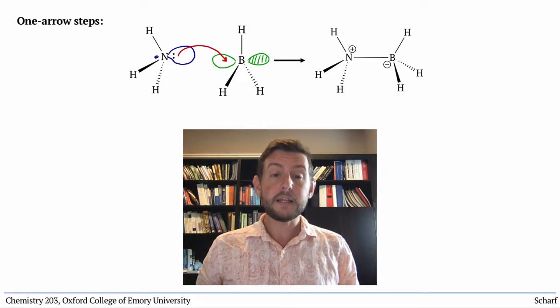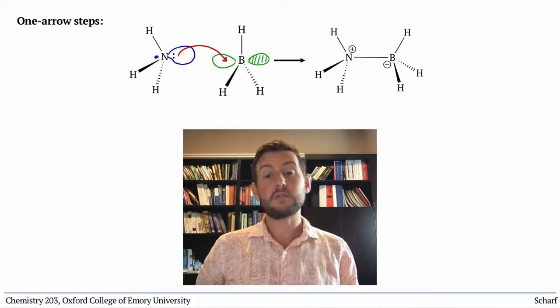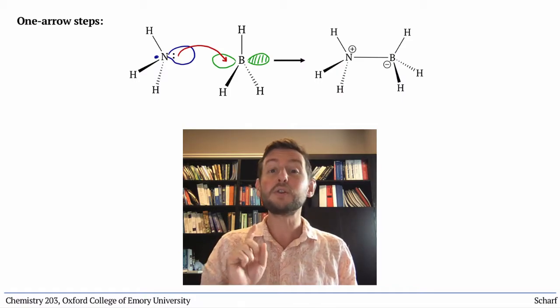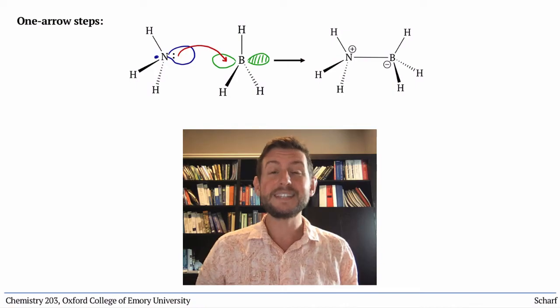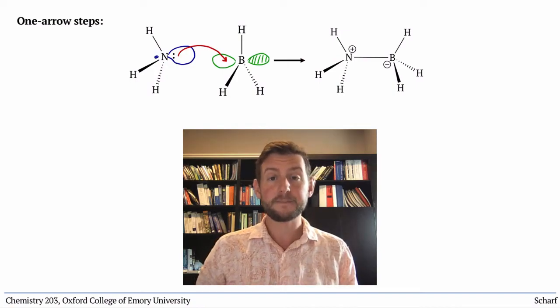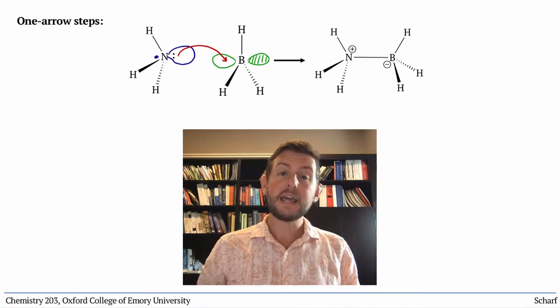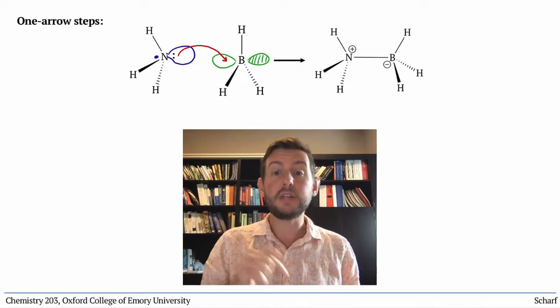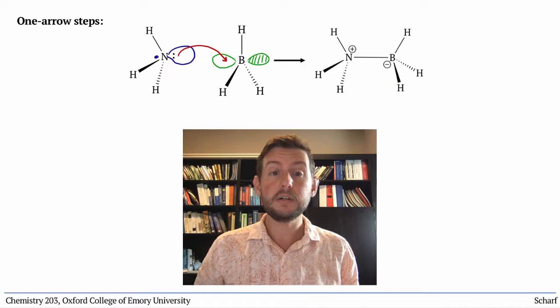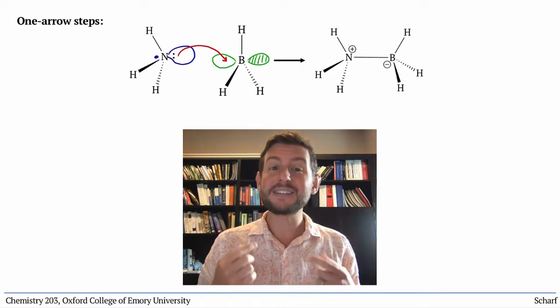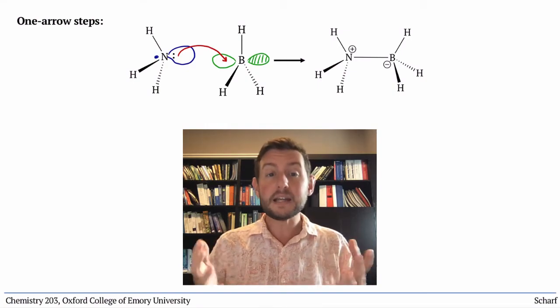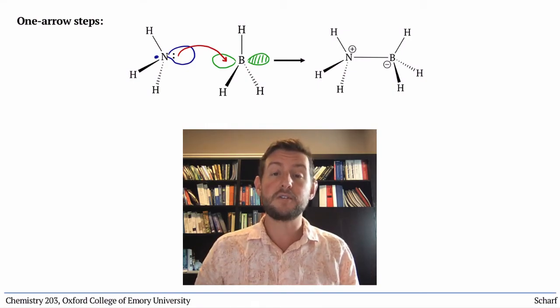More commonly, two or more arrows are required to show a step in a chemical reaction. This is the case whenever the LUMO of the electrophile is an antibonding orbital. When that's the case, electrons flow from the HOMO of the nucleophile into the antibonding LUMO. Since putting electrons into an antibonding orbital breaks the corresponding bond, we need to illustrate that bond breakage with our curved arrows.